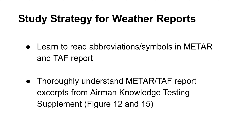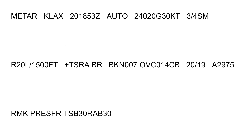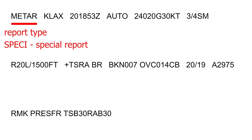Consider this METAR report. The first symbol is the type of report. In this case it is METAR, which is the current surface weather observation. Besides METAR, you can also see SPECI, which stands for special METAR issued in case of rapid changes in weather.